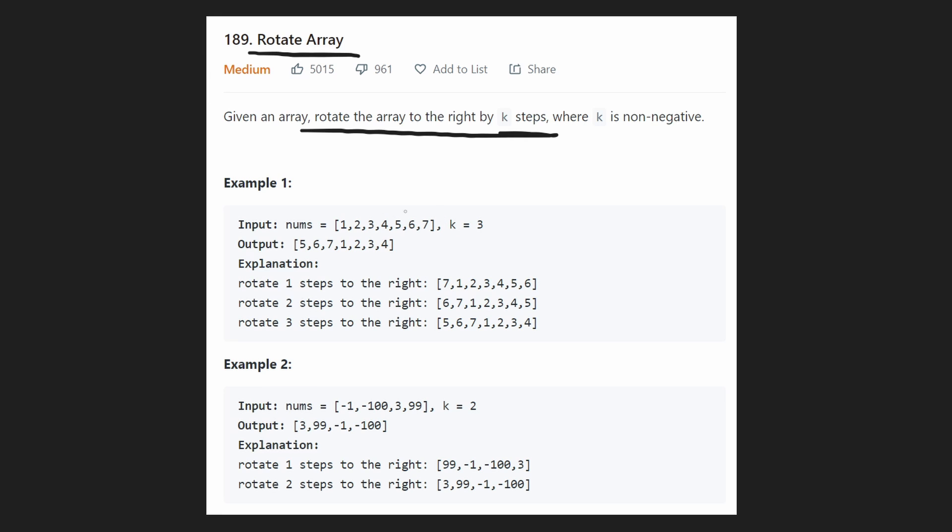So what does that mean? Well it basically means we're going to take every single element in the array, shift it to the right by k times. But what happens to the rightmost element such as this one? We can't really shift it to the right because there's no space. So if we do that we're basically looping it all the way around back to the beginning.